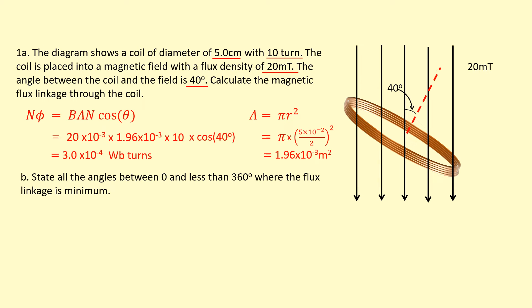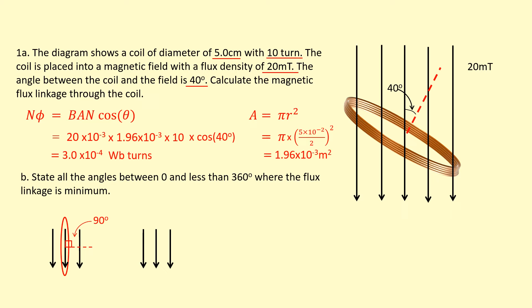Part b: state all angles between 0 and less than 360 degrees where the flux linkage is a minimum — basically zero. Right now it's at 40 degrees, but flux linkage is minimum when the loop is edge-on to the field. At that point the angle between the normal and the field line is 90 degrees. When it points the other direction, flux linkage is also zero — at 270 degrees, measuring between the field line and the normal.